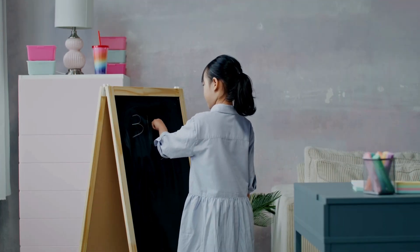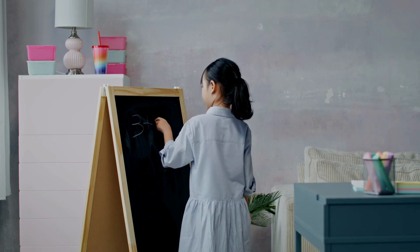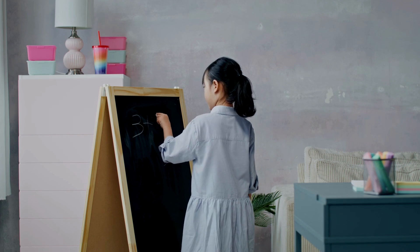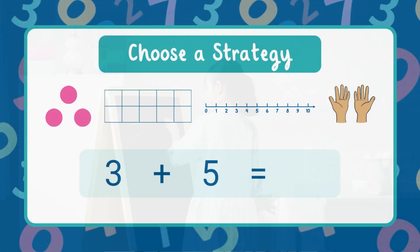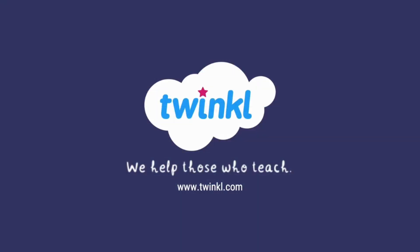Now you know how to add to ten using four different strategies: objects, ten frames, number lines, and fingers. Let's try one last problem together — you choose your favorite strategy to solve it. What is three plus five? Take a moment and use the strategy you like best. Did you get eight? Great work! Subscribe to Twinkle Teaching Resources USA for more — it's easy with Twinkle videos.